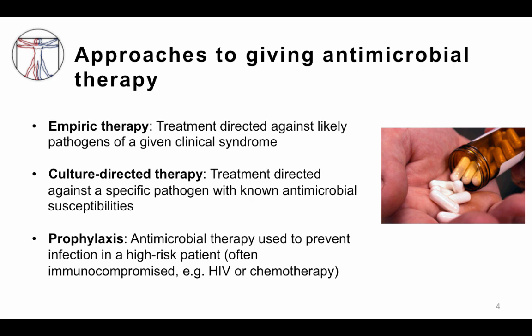The second strategy is culture-directed therapy — treatment directed against a specific pathogen with known antimicrobial susceptibilities. For example, that patient with community-acquired pneumonia: you got a sputum culture, it grew Streptococcus pneumoniae, and it was susceptible to penicillin. Therefore you could give a more narrow-spectrum antibiotic and switch the patient from levofloxacin to penicillin to cover penicillin-susceptible Streptococcus pneumoniae.